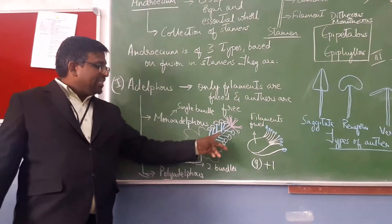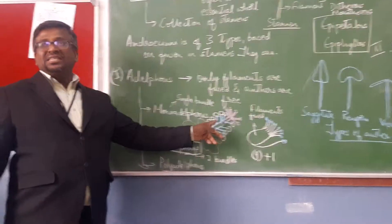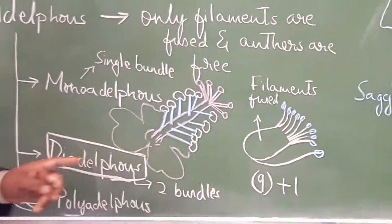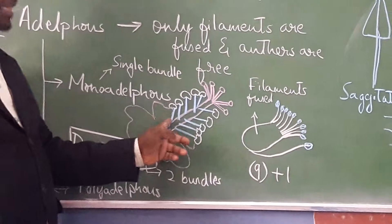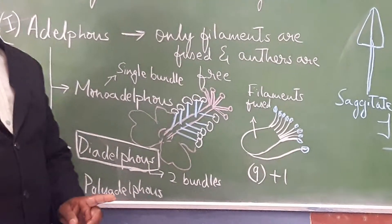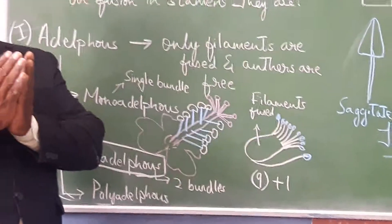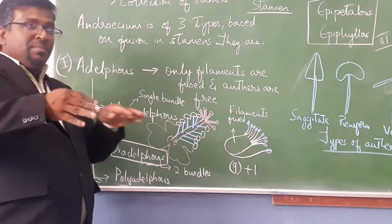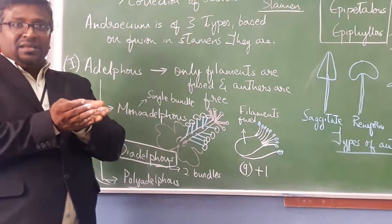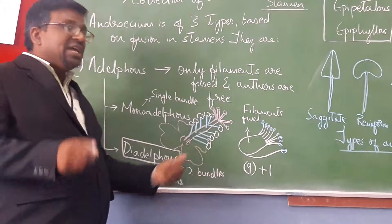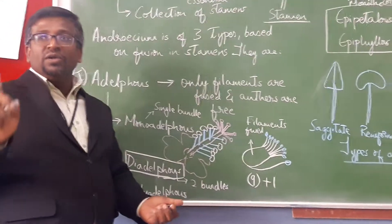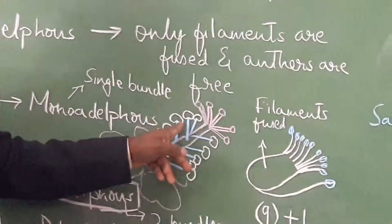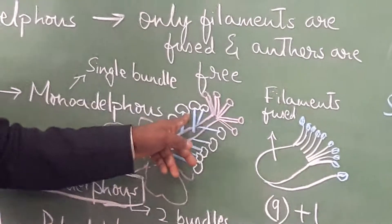In hibiscus, there is a staminal tube formed by the fusion of all filaments, while only the anther lobes are free at the tip. Since all filaments are fused into a single bundle, we call it monoadelphous condition. The anthers in hibiscus are monothecous and are kidney-shaped, so we call them reniform anthers.